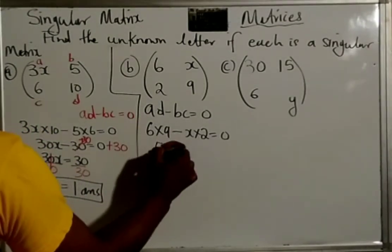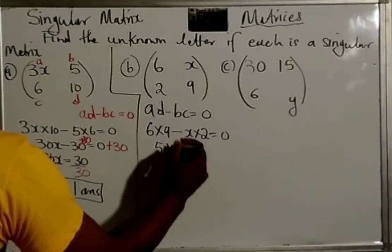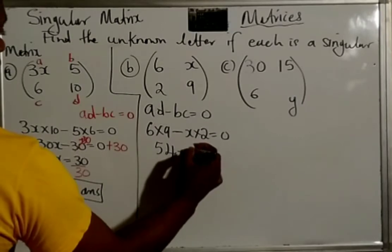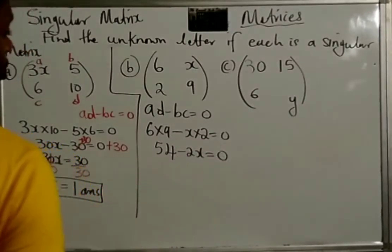So, 6 times 9 minus X times 2, and that is equal to zero. 6 times 9 is 54, minus X times 2 will give us negative 2X, and that is equal to zero.